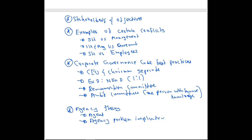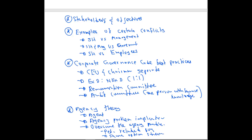There are certain implications of this agency problem — eventually management takes decisions for short-term benefits while long-term benefits get compromised. You should also know methods to overcome the agency problem. Examples include performance-related pay and giving a share option scheme to management. These are methods you can use to overcome the agency problem.